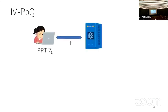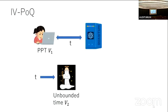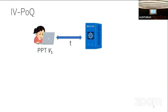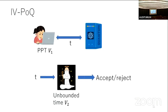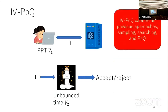Let me explain what IVPoQ is. It is very similar to PoQ: we have a PPT verifier, a prover, and they exchange classical messages. The crucial difference from PoQ is that the final verification is done by another unbounded verifier. All the messages exchanged in the interactive round are sent to this second unbounded verifier who makes the accept or reject decision. Because of this, IVPoQ captures all previous approaches to quantum advantage, including sampling, searching, and efficiently verifiable PoQ.